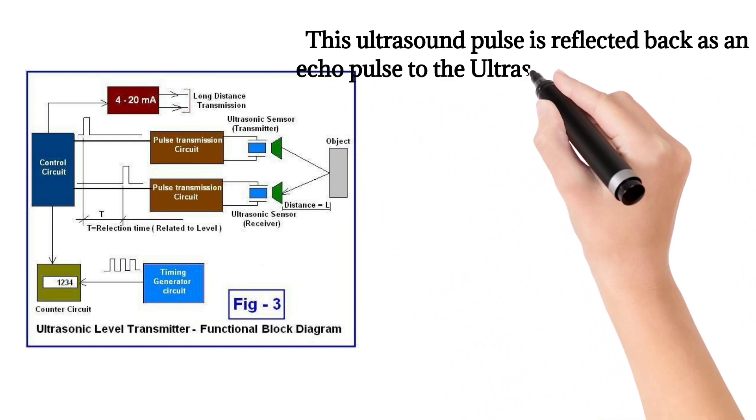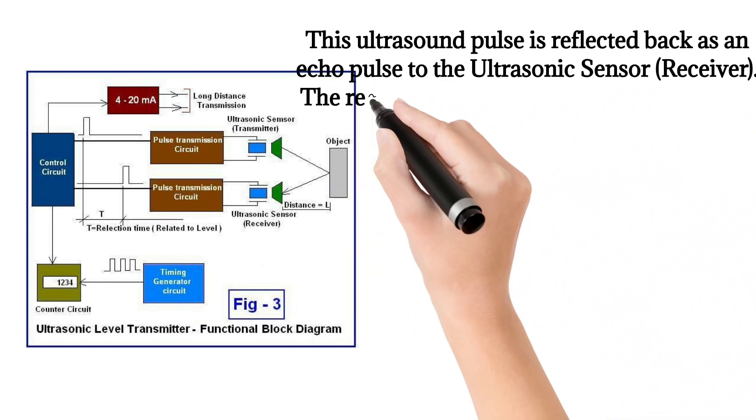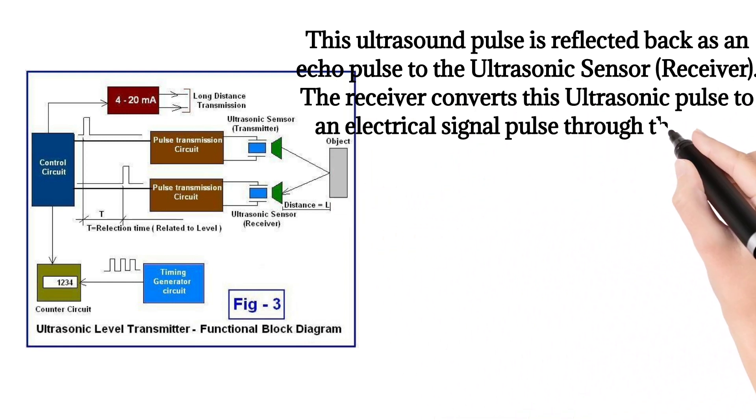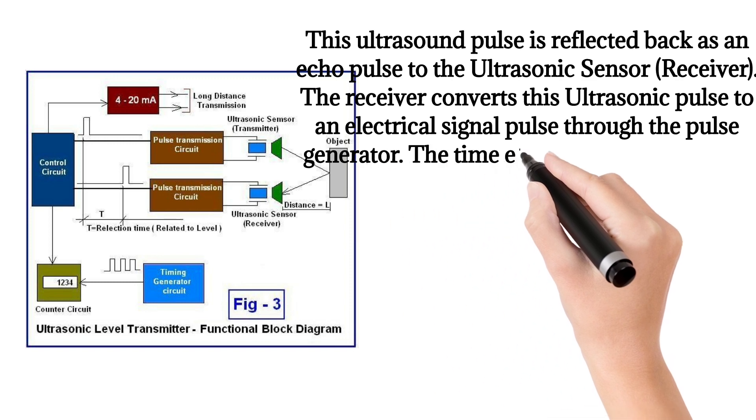This ultrasound pulse is reflected back as an echo pulse to the ultrasonic sensor receiver. The receiver converts this ultrasonic pulse to an electrical signal pulse through the pulse generator. The time elapsed, or the reflection time, is measured by the counter.